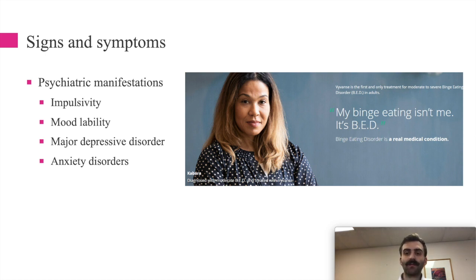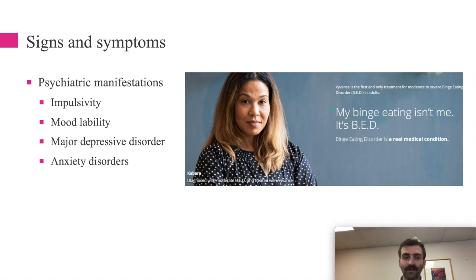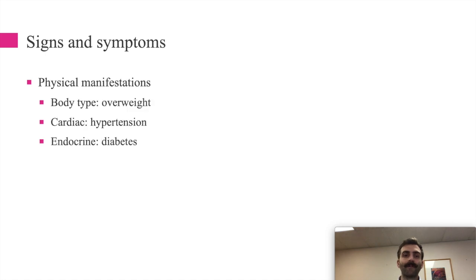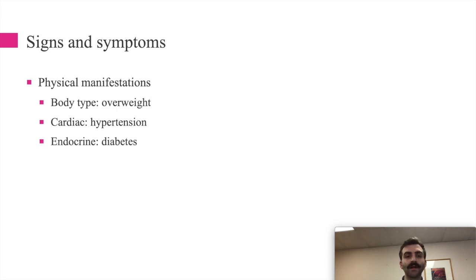Signs and symptoms of binge eating disorder mirror those of anorexia and bulimia psychiatrically: impulsivity, mood lability, substance use, major depressive disorder, anxiety disorders, and components of OCD. The body type is generally overweight, and physical manifestations relate to obesity — hypertension, diabetes, high cholesterol, increased risk of stroke and heart attack.